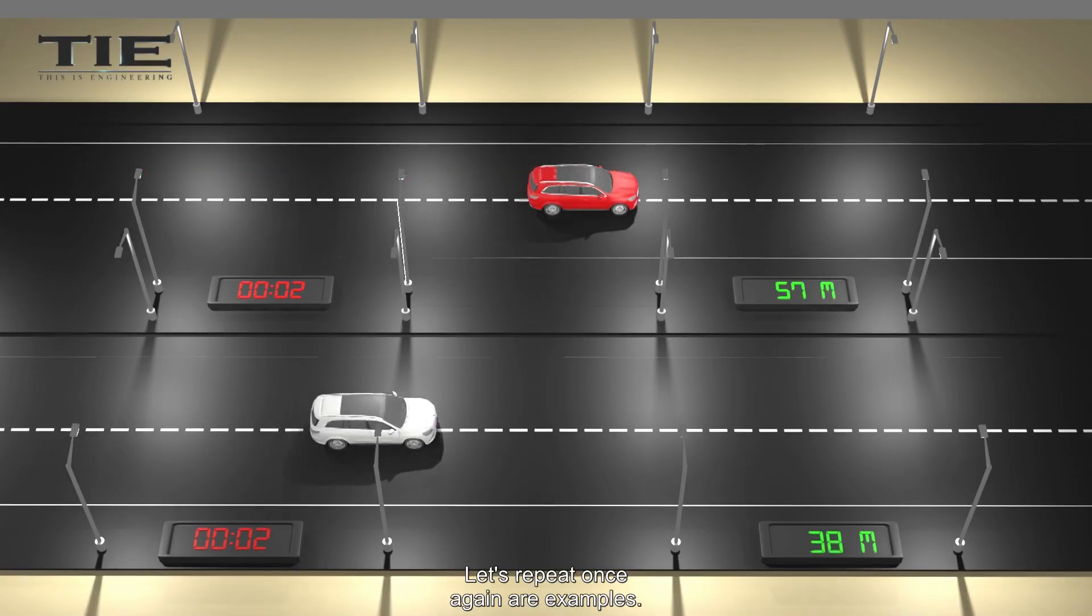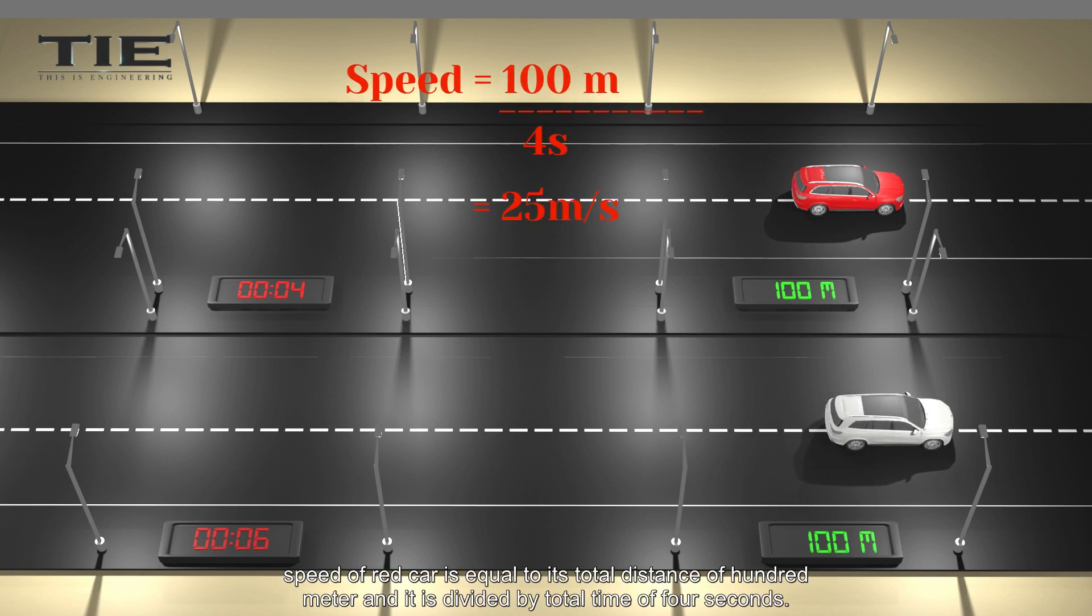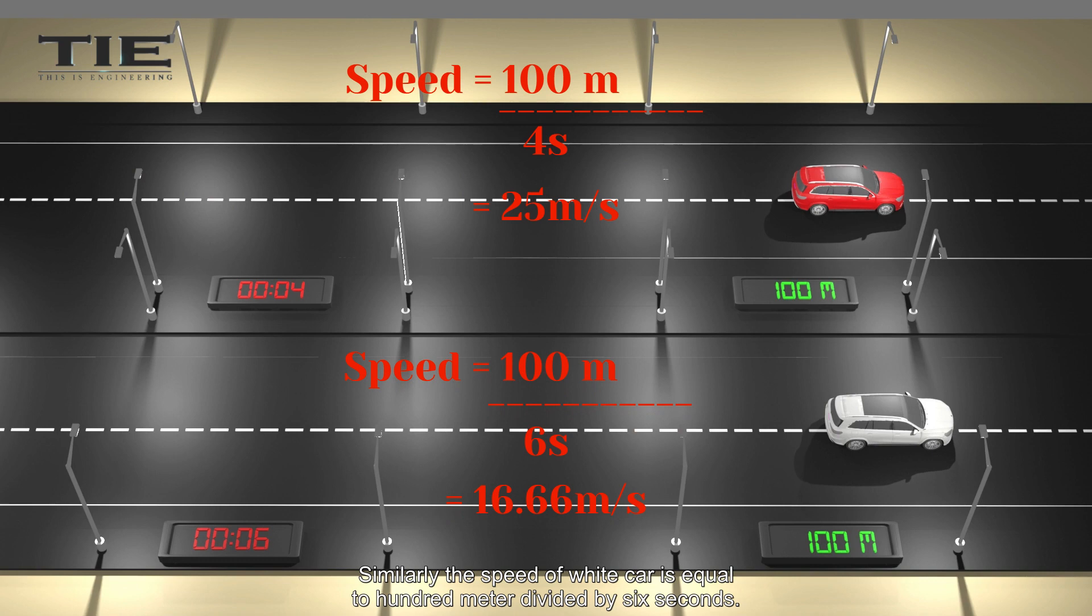Let's repeat once again our examples. In first situation, speed of red car is equal to its total distance of 100 meter, and it is divided by total time of 4 seconds. So the speed of red car is 25 meter per second. Similarly, the speed of white car is equal to 100 meter divided by 6 seconds. So the speed of white car is 16.66 meter per second. So our analyze is right. Red car is faster than white car, as per formula.